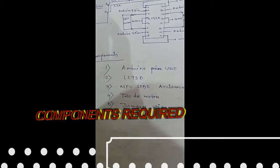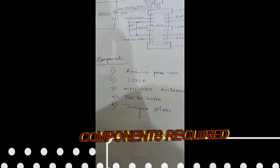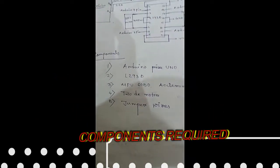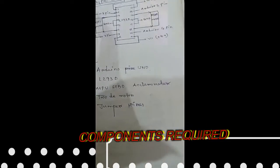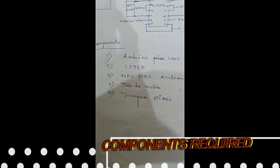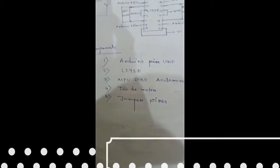The components required are an Arduino UNO board, a motor controller L293D, third is MPU6050 accelerometer, fourth is two DC motors and fifth is jumper wires.